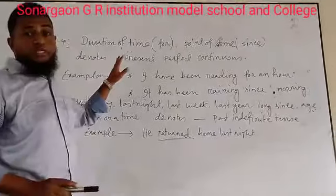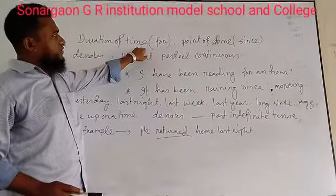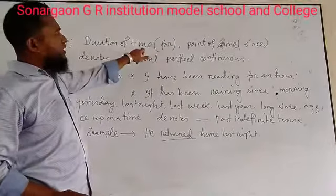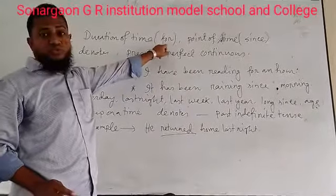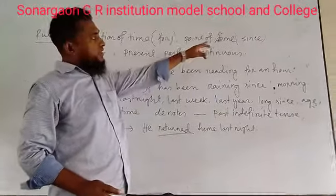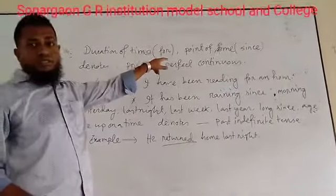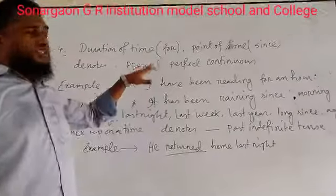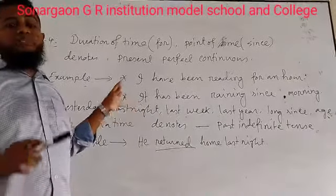There are two specific things you have to learn: duration of time and point of time. Duration of time means one hour, two hours, one day, two days, etc. — and they use the preposition 'for'. Point of time refers to a specific time, and uses 'since'. 'Since' is for definite specific time, and 'for' is for indefinite time, that means duration of time.